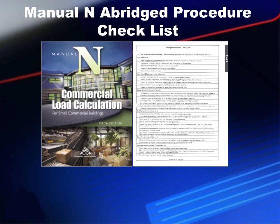First things first, we've got rules. The rules are listed in a checklist right across from page one — it's two pages of all the do's and don'ts necessary to get proper answers from Manual N. There are certain defaults set on the speed sheet, and if you're not within the range of those defaults or what Manual N is designed to do, you're not going to get a right answer and you don't want to use the Manual N Speed Sheet.